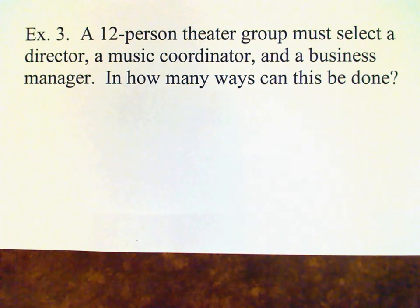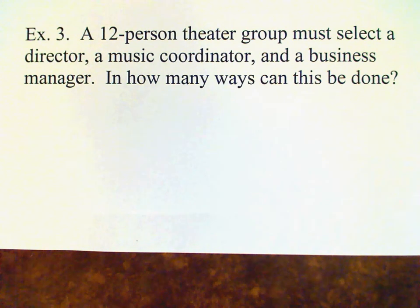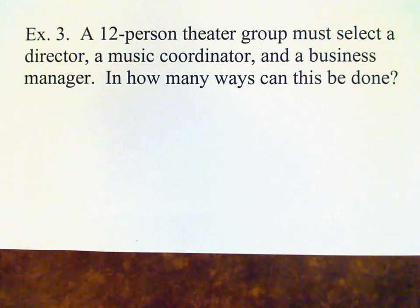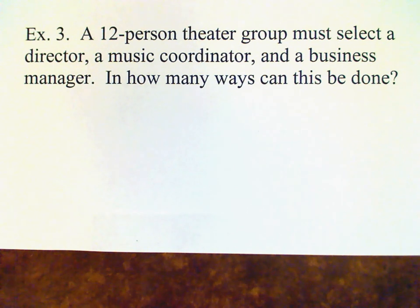Let's look at one example where the permutation number comes up in a natural setting. We have a 12-person theater group, and this group must select a director, music coordinator, and a business manager. In how many ways can this be done?